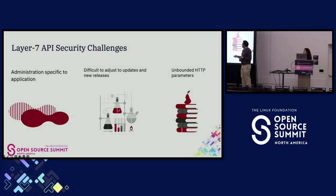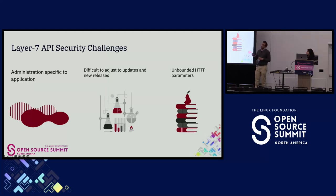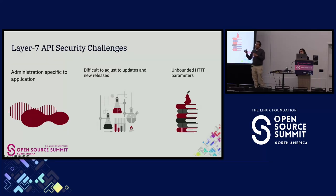A second challenge is that APIs change often, making it difficult to update policies. And finally, when dealing with layer 7 protocols like HTTP, the number of possible values for many parameters is unbounded. I cannot really say that a parameter value will only have a limited set of values in the output — I can have any key mean anything. I cannot really quantify it.